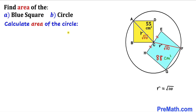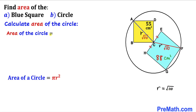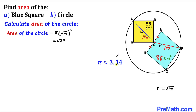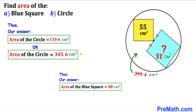Finally, let's calculate the area of the circle using the formula πr². Our radius r = √110, so area = π × (√110)² = 110π. Since π ≈ 3.14, the area of the circle is approximately 345.6 centimeter square.